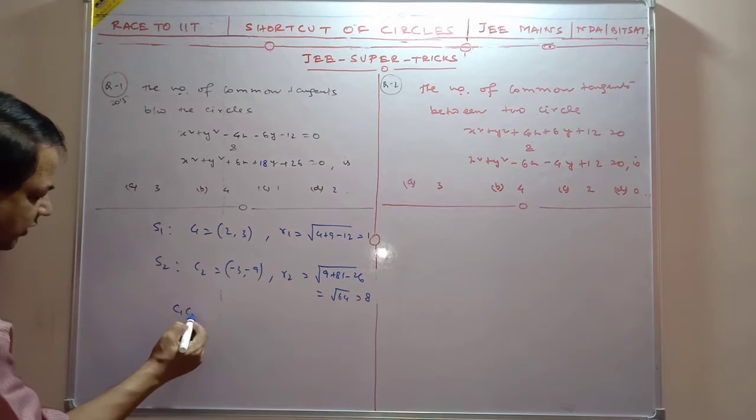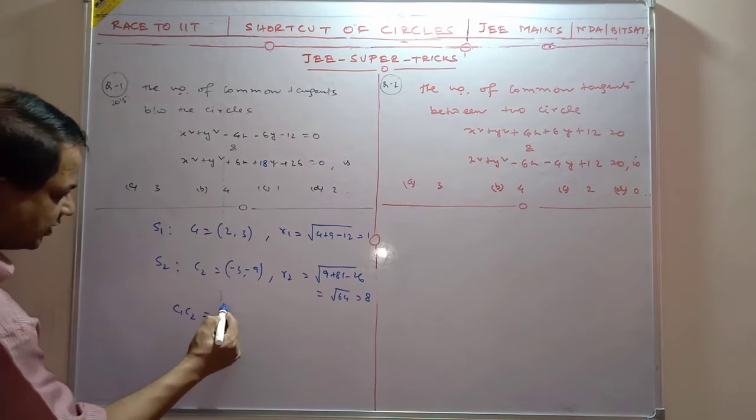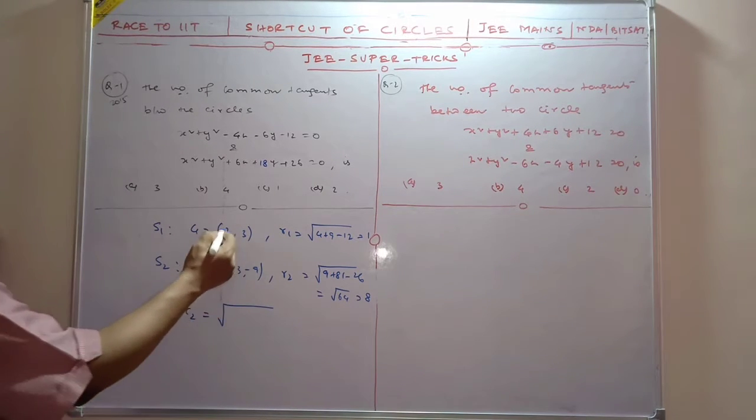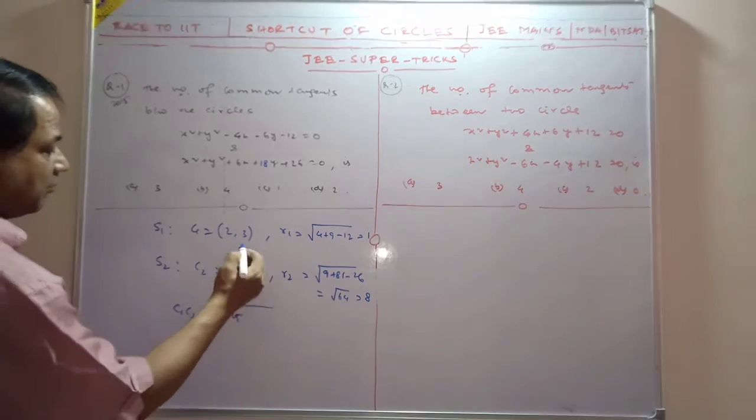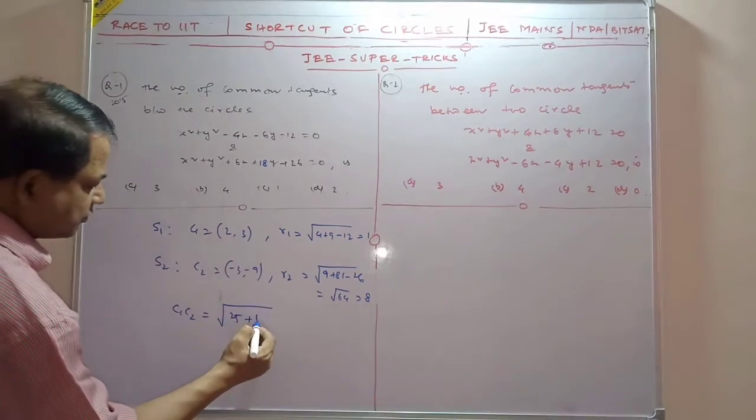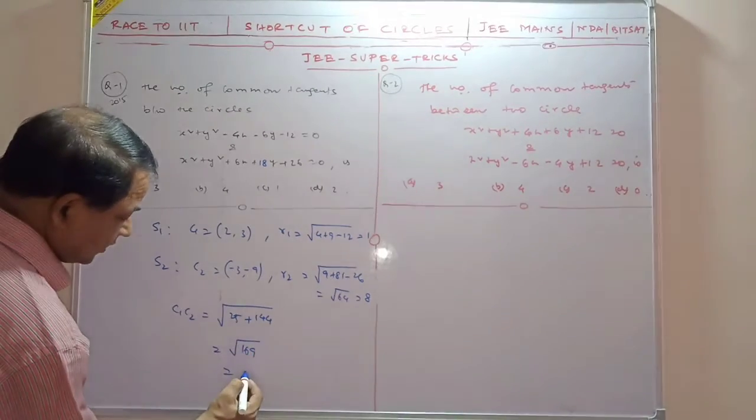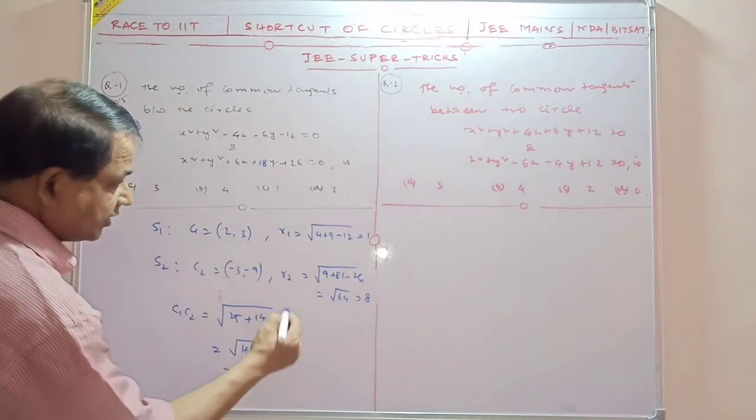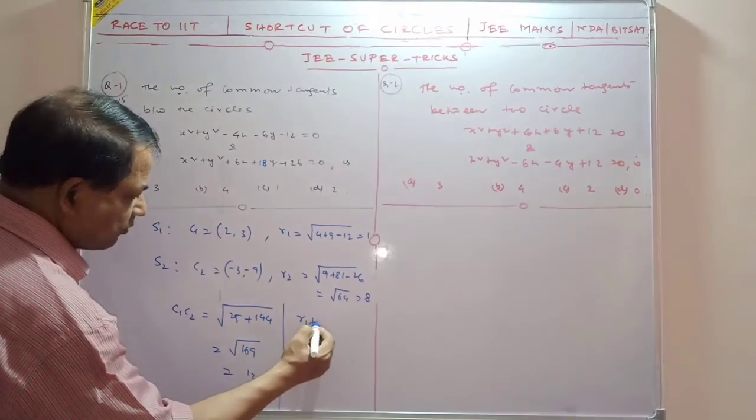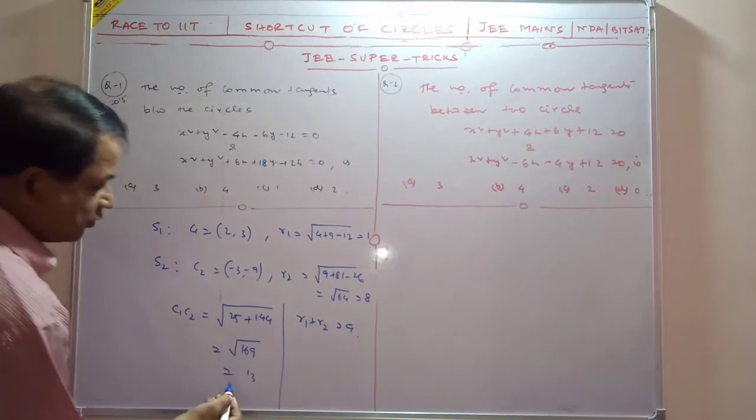Now find the distance between these two centers. The distance between these two is: minus 3 minus 2 squared, plus minus 9 minus 3 squared. That is 25 plus 144, which is 169. So the distance is 13. And R1 plus R2 is 9.